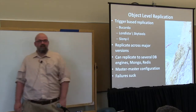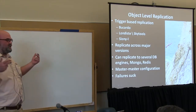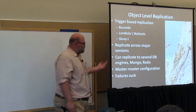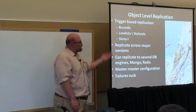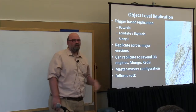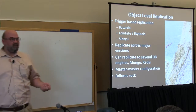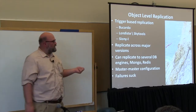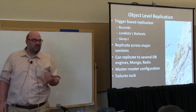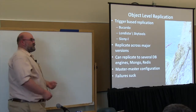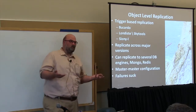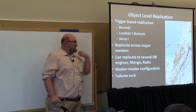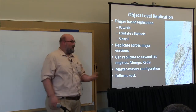Bucardo also handles master-master configuration, meaning I can have two master databases collecting data and communicating with each other. What could possibly go wrong? Failures are the worst. When you get down to table-level replication and things go out of sync, you're running queries to compare the two tables. There are tools for database compares and table diffs, but it becomes a granular pain to fix — a lot of times with the biggest databases, you have to start over and replicate from scratch, which can take a week for a terabyte database.